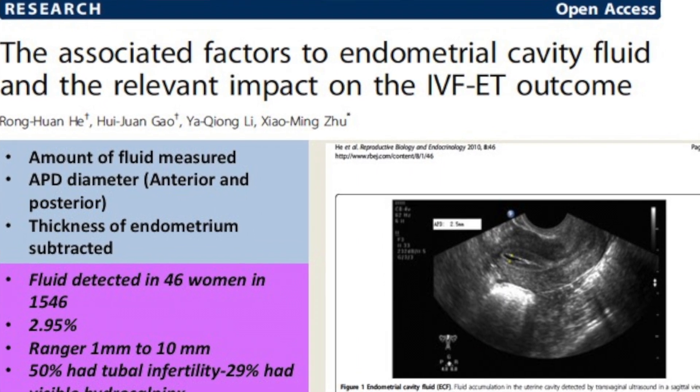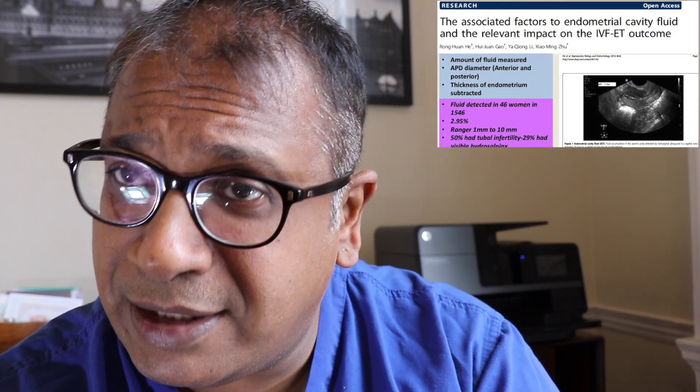A paper examined whether the amount of fluid in the endometrial cavity makes a difference. They measured the APD diameter of the fluid, measured the endometrial thickness, and subtracted it from the APD diameter. Fluid was detected in about 46 women from over 1,500 women — an incidence of about 2.95 percent. The range was 1 to 10 millimeters; 50 percent had tubal infertility, 29 percent had visible hydrosalpinx, and a small proportion had endometriosis.